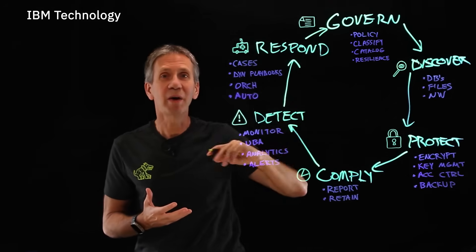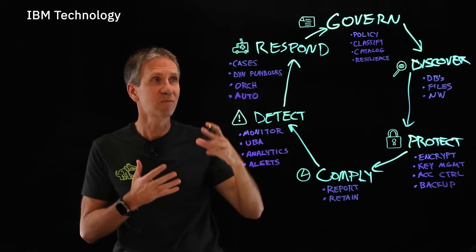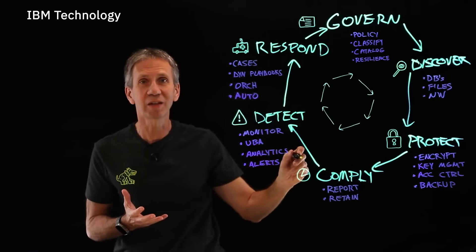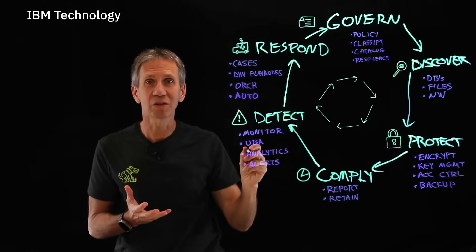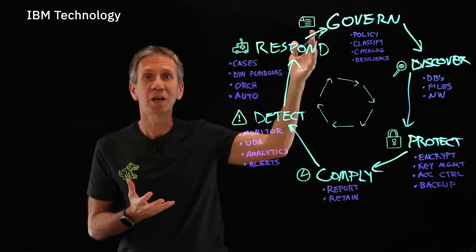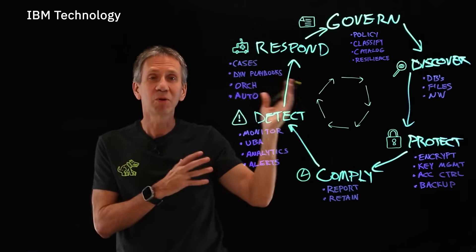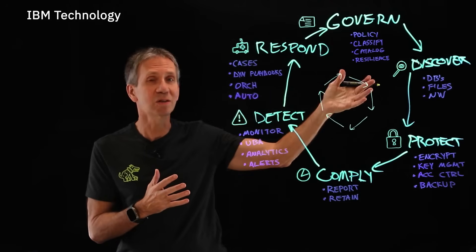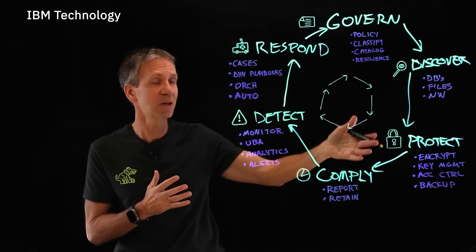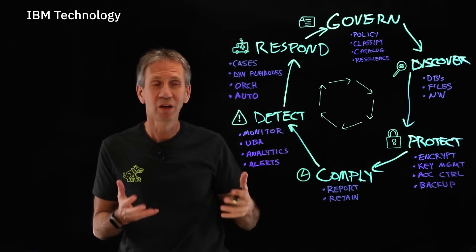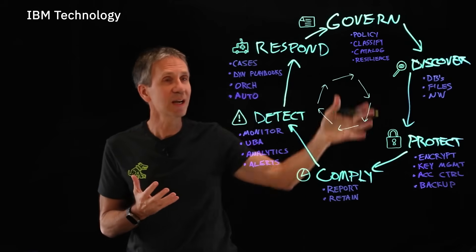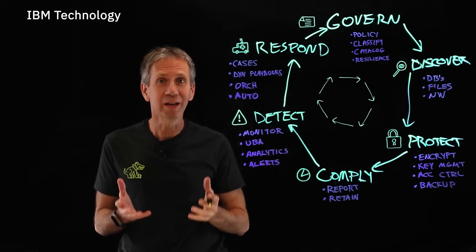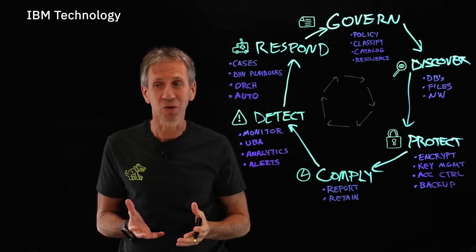Ultimately, all of this leads back to a kind of ecosystem — think of this as a virtuous cycle. I take the information I've learned in each of these stages and feed it into the other stages. My response tells me where we failed. Maybe we need to change the way we govern, change our policies, change the way we discover information, protect it, and so forth. What we're trying to do is create this ecosystem that allows us to protect the information that is the lifeblood of the organization.